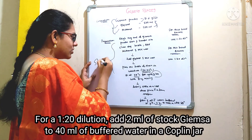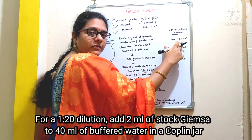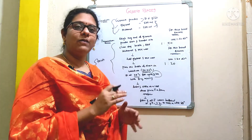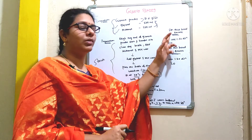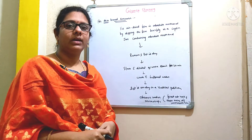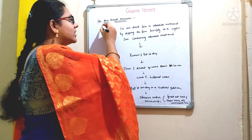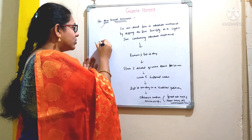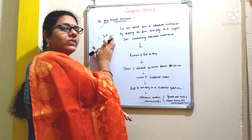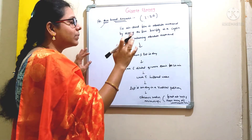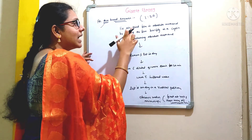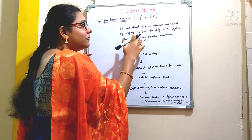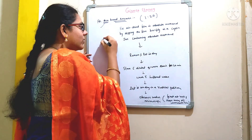This is the stock solution. For thick smears you should use 1:50 dilution, whereas for thin blood smears you need to use 1:20 dilution. Coming to the procedure for thin blood smears — use a 1:20 dilution. In the first step, fix a dried film in absolute methanol by dipping the film briefly in a Coplin jar — just go with two dips.